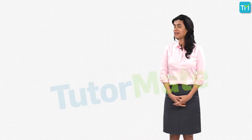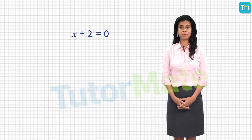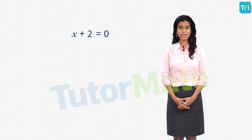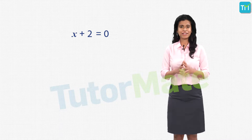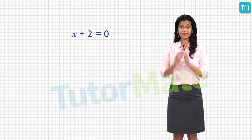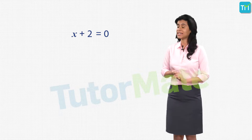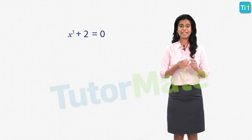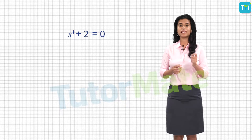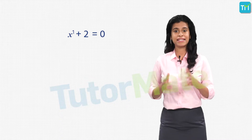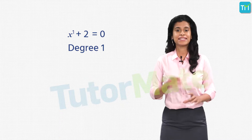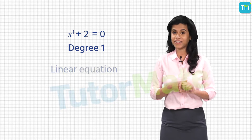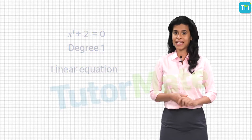Now look at these equations. The first equation is x plus 2 is equal to 0. Can you tell me what its degree is? If we see here, the variable is x and its highest power is 1, which means that this equation has a degree of 1 and such equations are called linear equations.